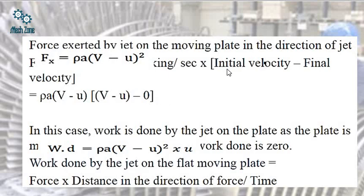So this was also obtained in the same way as we have obtained the force which was exerted on the flat plate when it was stationary. Now if we need to find out the work done, we will simply multiply this force by the velocity of the plate. So work done by the jet on the flat moving plate would be force multiplied by the distance in the direction of force, and hence the work done was evaluated.